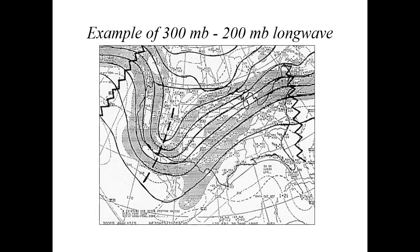Here's an example of a 300 to 200 millibar long-wave chart — 300 millibars is 30,000 feet, 200 millibars is 40,000 feet. The solid lines represent lines of equal height (height contours). The hacksaw jagged line indicates a ridge axis — an area of upper-level ridge at the jet stream level. The black dashed line represents a trough axis — the lowest atmospheric heights at this level. Troughs are generally associated with cooler temperatures; ridges are associated with warmer temperatures.